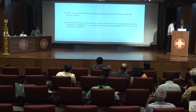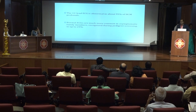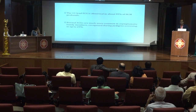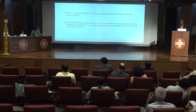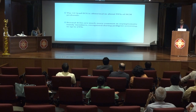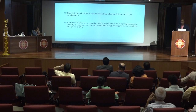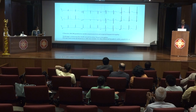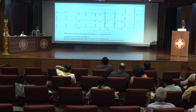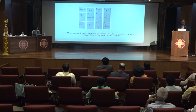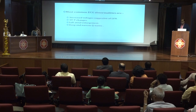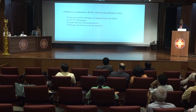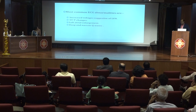The 12-lead ECG is abnormal in nearly 95% of hypertrophic cardiomyopathy patients. A normal ECG is more common among asymptomatic family members recognized during pedigree screening, and is associated with a more benign clinical course. Common ECG features include increased voltage suggestive of LVH, ST segment and T wave changes, left atrial enlargement, and deep narrow Q waves.